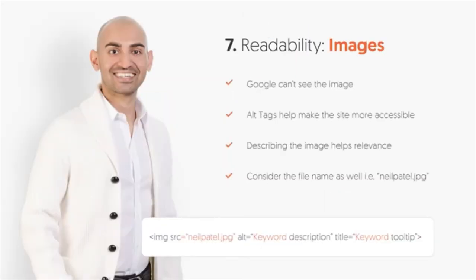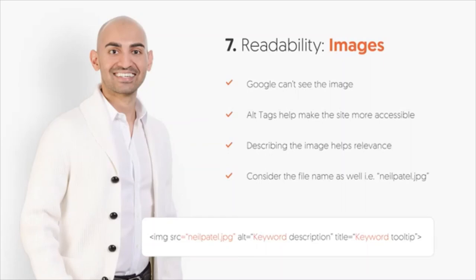Keep in mind that Google can't see your images. You want to use an alt tag to describe what your image is. For example, the code would be: image source 'neilpatel.jpg', with the alt attribute set to 'Neil Patel' and the title tooltip also set to 'Neil Patel.' This helps Google understand the image and also helps people with disabilities who use programs to describe websites. Making your site accessible for disabled users is also good for rankings.